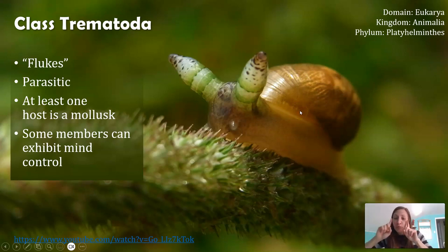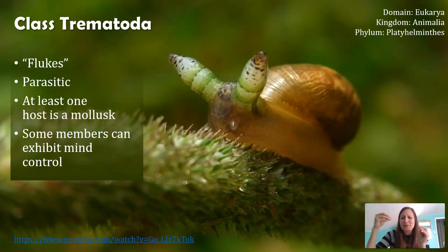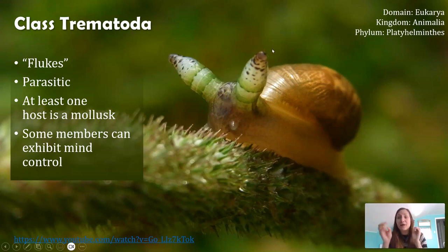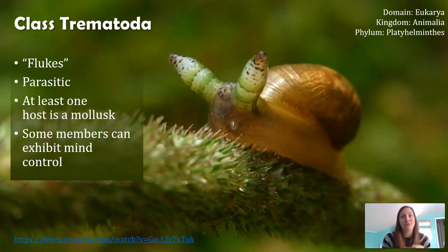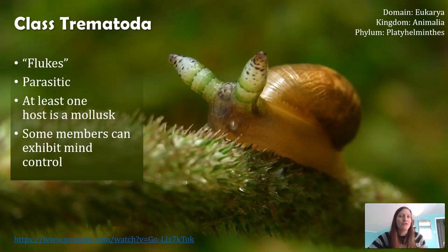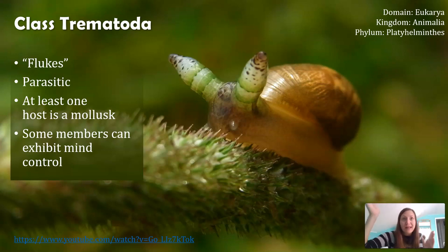The larvae make their way into the eye stalk. A typical snail eye stalk is narrow, brown, and uninteresting, but these larvae go into the eye stalks and start pulsing, essentially starting to look like maggots — which is a really great food source for birds. Not only do they physically look like maggots, but they're able to make the snail travel up grass blades and plants, essentially getting themselves into the sun so the birds can actually see them.